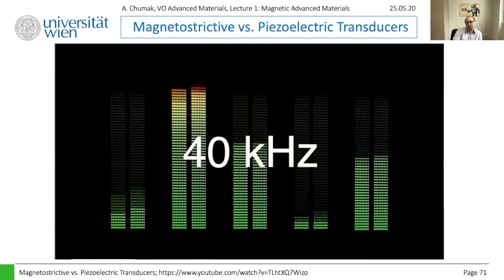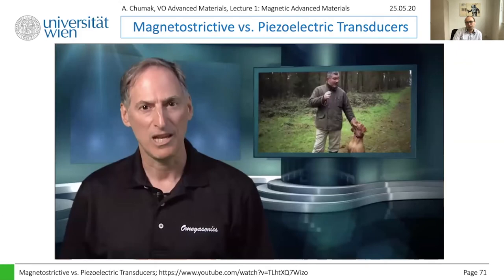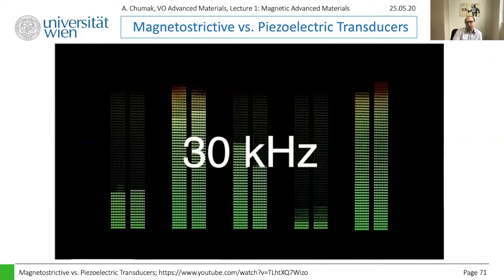Since most piezoelectric transducers operate at 40 kHz and above, their first subharmonic frequency is above 20 kHz, beyond the range humans can hear. Magnetostrictive transducers operate at 30 kHz or less, putting the first subharmonic in the audible range for humans — 20 Hz to 20 kHz.